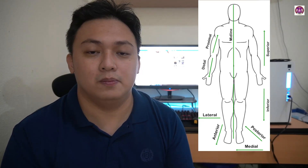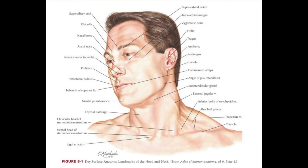For the next picture, we have some key surface anatomical landmarks of the head and neck. You can see these structures by looking at yourself in the mirror — the superciliary arch, the glabella, the nasal bone, and the ala of the nose. You will discuss these structures in more detail when you go to the head and neck part of the course. All of these structures can be appreciated without dissection.